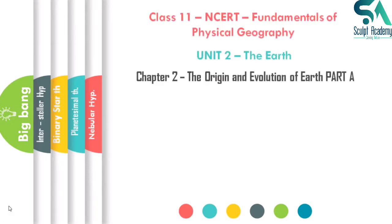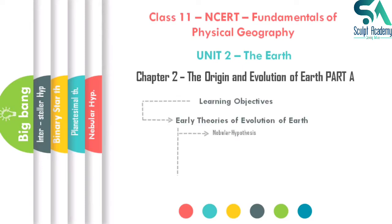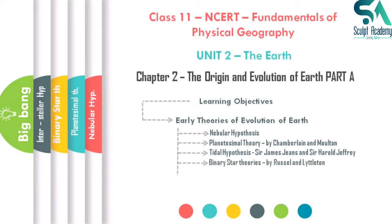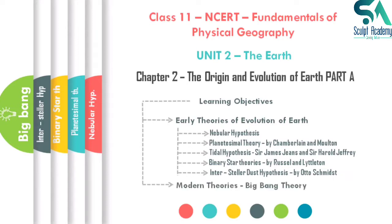Hello everyone, welcome to the second lecture in the series of Geography NCERT course. In this lecture we are going to study Unit 2: The Earth, specifically Chapter 2 - The Origin and Evolution of Earth, Part A. The learning objectives include early theories of evolution of earth: nebular hypothesis, planetesimal theory, tidal hypothesis, binary star theories, interstellar dust hypothesis, and modern theories including the Big Bang theory.